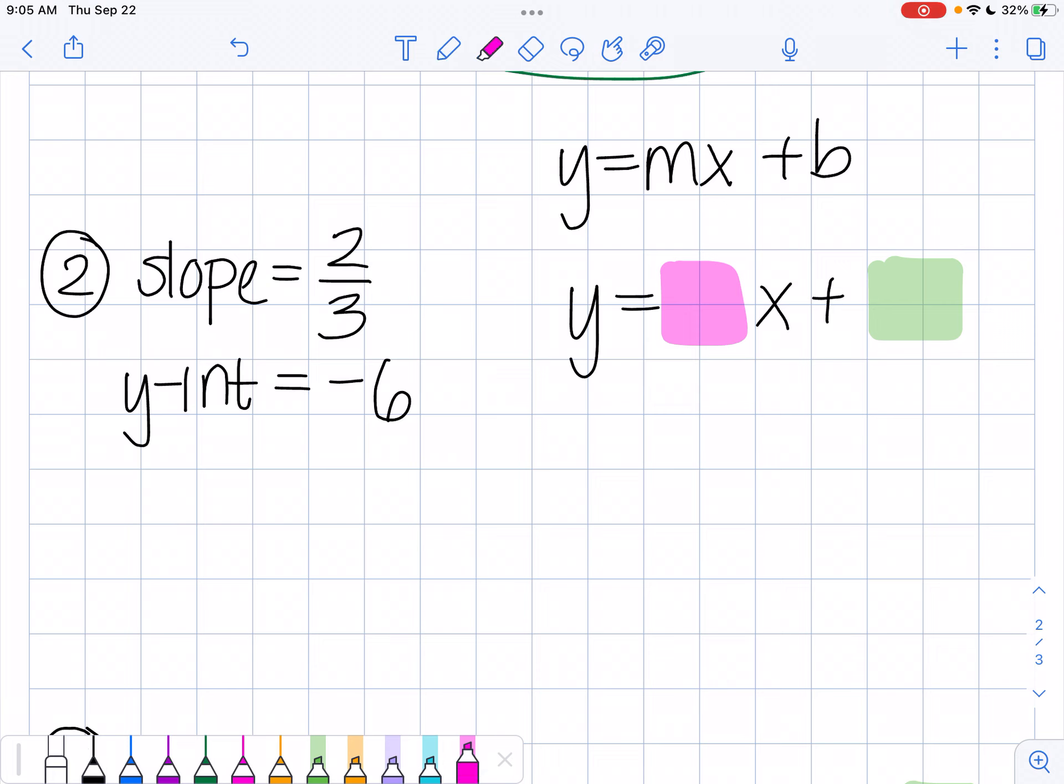So I'm going to take this 2 thirds and plug it in for my slope, and I'm going to take this negative 6 and plug it in for my y-intercept. So I get 2 thirds x plus negative 6.